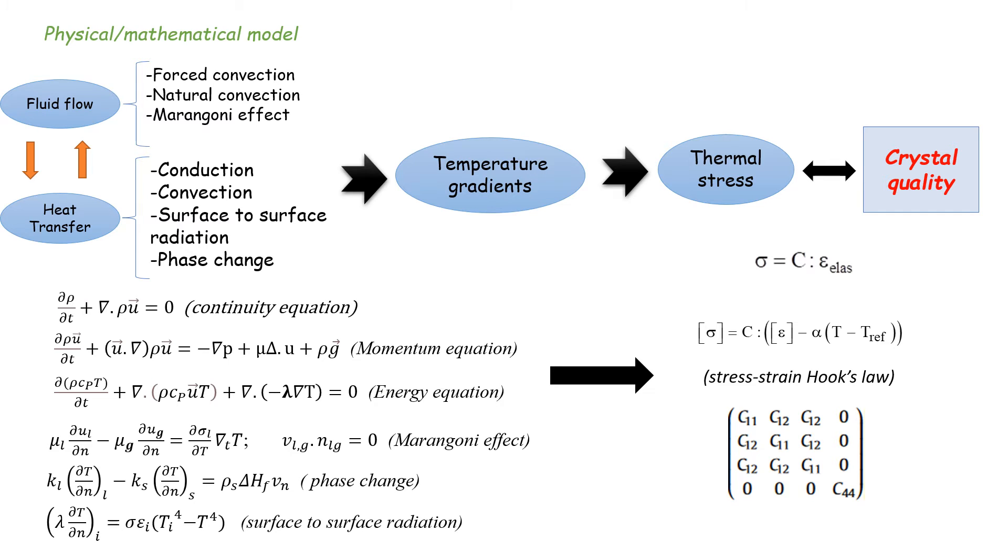This study couples all physical phenomena including fluid flow, heat transfer, and stress-strain Hooke's law in one numerical global model: natural convection inside the melt, Marangoni effect at the free surface, mixed convection in the gas, phase-change material between the melt and crystal, and surface-to-surface radiation between all diffuse gray surfaces. The resolution of the mathematical models leads us to calculate the distribution of temperature and Von Mises stresses during the process.